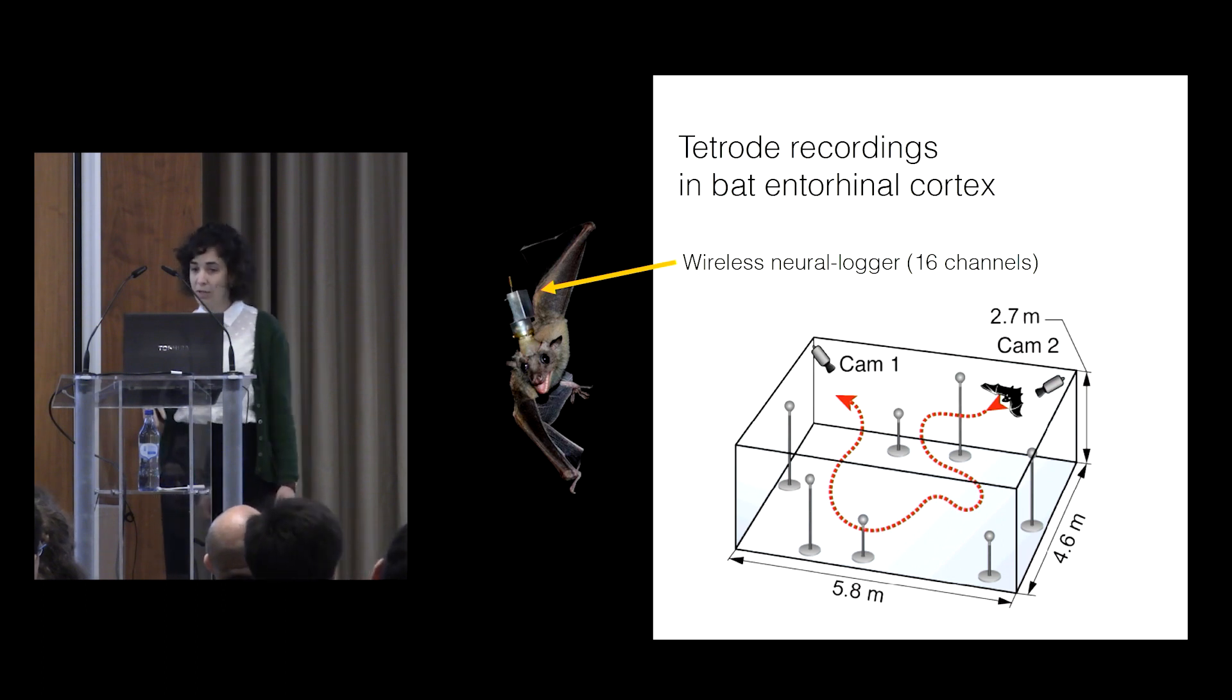we do tetrode recordings in bat entorhinal cortex. That's where grid cells are found. And we use a wireless neural logger,